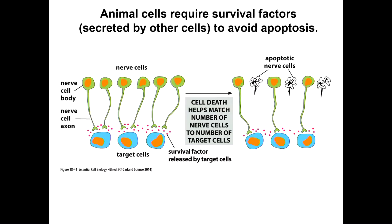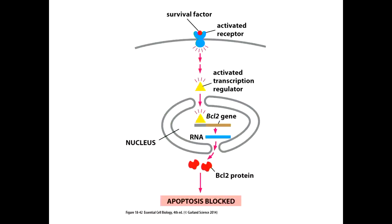One example of why that's important is the development of your brain and nervous system. Having too many neurons is a bad thing. You can actually have health conditions, including mental health conditions, traced back to having too many neurons in a particular location or not being wired well. It's the Goldilocks idea — too much or too little are not good things. A survival factor stimulates a receptor, triggers a signaling cascade, a transcriptional regulator goes to the nucleus, and in this example, stimulates BCL2 protein production, which blocks apoptosis.